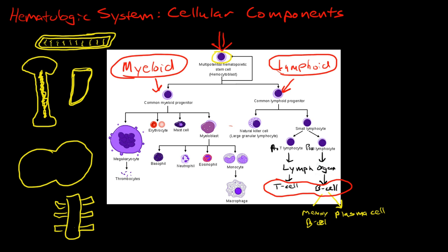The myeloid line can make megakaryocytes, which make platelets, otherwise known as thrombocytes, and erythrocytes or red blood cells, basophils, neutrophils, eosinophils, and monocytes.